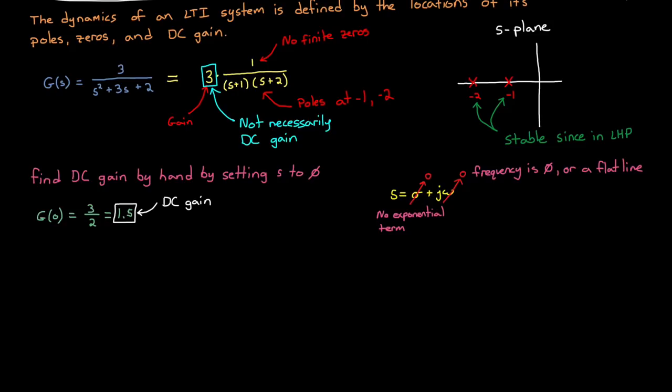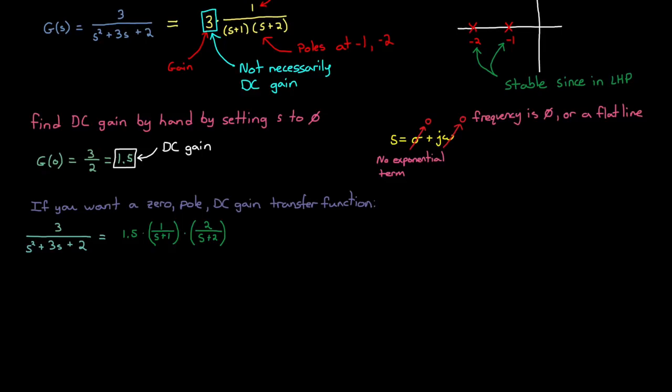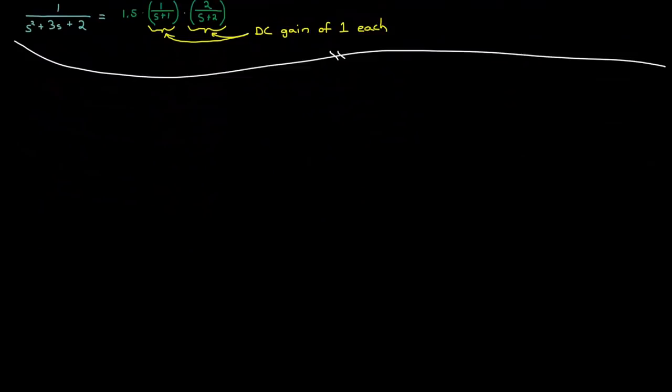Technically we're looking for the limit as s goes to 0, but just setting it to 0 is close enough. Now if you wanted to write out your transfer function as a zero pole DC gain function, then you'd have to make sure that each pole and zero was written in such a way that they each had a DC gain of 1. Then the multiplier that's left over is the DC gain of the entire system. Okay, hopefully that helped at least a little bit because we're going to use the DC gain of our system later on in this video.